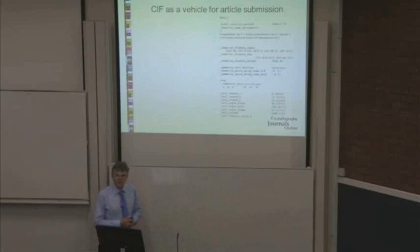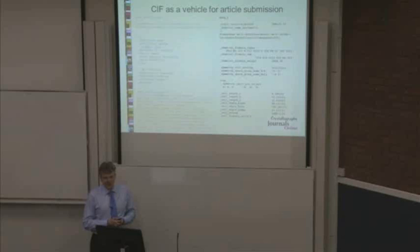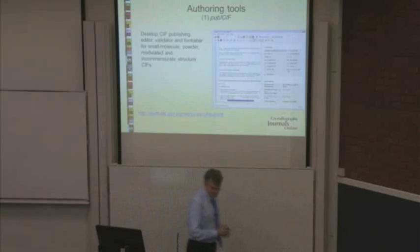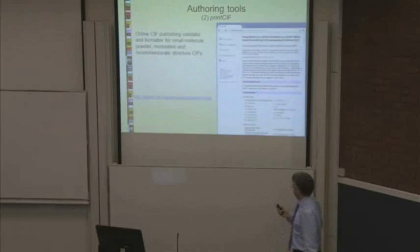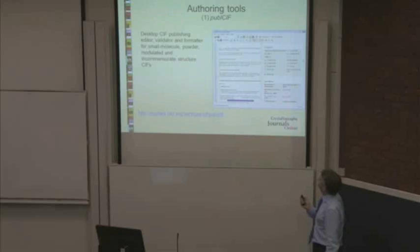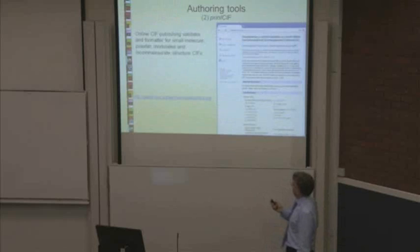CIF contains structural data and also textual data. This is a typical set of structural data — cell parameters, weights, symmetry operations. In combination with the textual information, you can go straight to a preprint of the article. What tools do we make available? Simon Westrip has written a program called PublCIF, which is downloadable and freely available. It's essentially a WYSIWYG editor where on the left-hand side you have the CIF, on the right-hand side you have a representation of the article. You can make changes in either and they're reflected on either side. It's a very useful, very well-used utility.